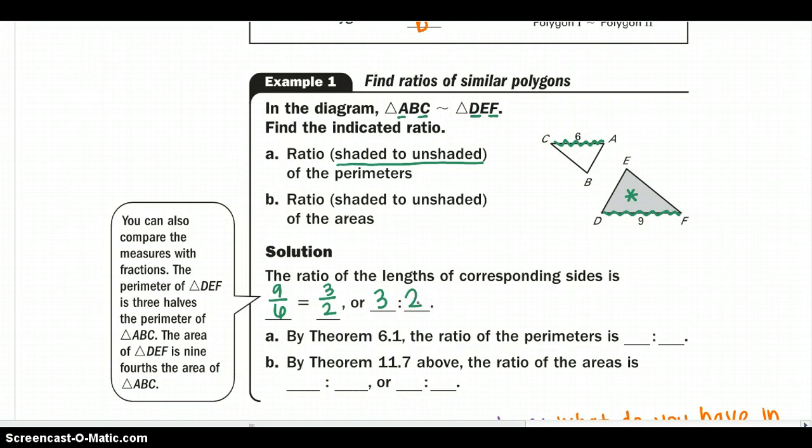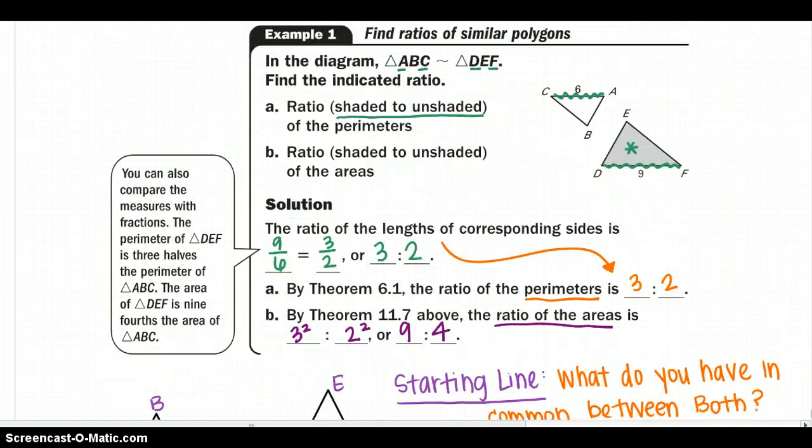Now by theorem 6-1, the ratio of the perimeters is 3 to 2, which if you notice would be the same as the side lengths. And now looking at theorem 11-7 from above, we're going to take that same ratio but we're just going to square each value. So the area ratio will now be 9 to 4, and we can use that to find different things later on.